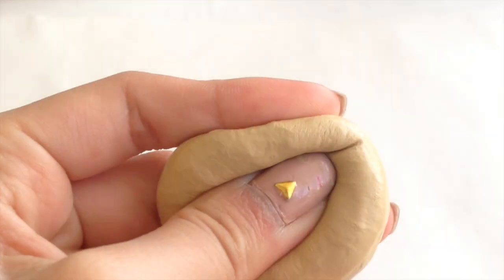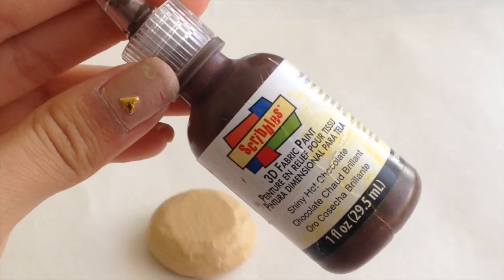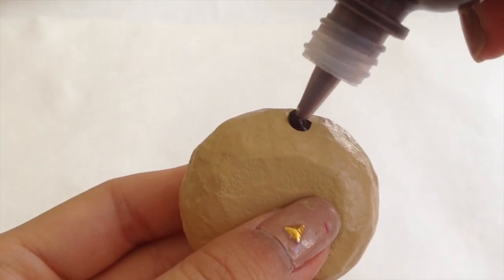This is how the cookie looks like after two coats of paint. Now with some brown puffy paint I am going to draw on the chocolate chips.